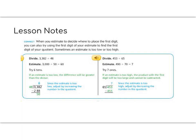It says when you estimate to divide where to place the first digit, you can also try using the first digit of your estimate to find the first digit of your quotient. Sometimes an estimate is too high or too low.